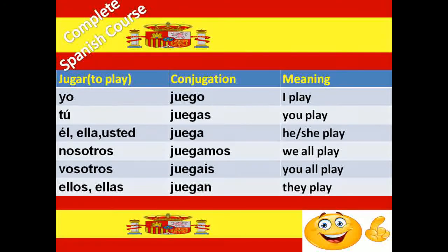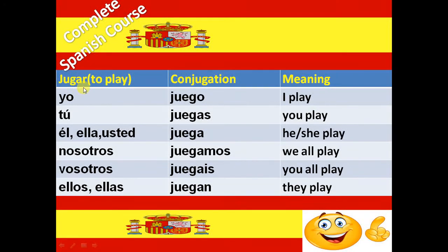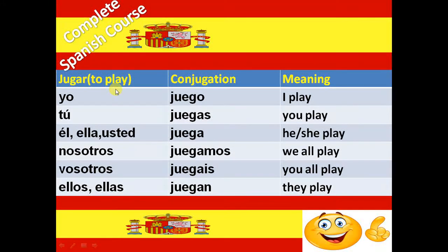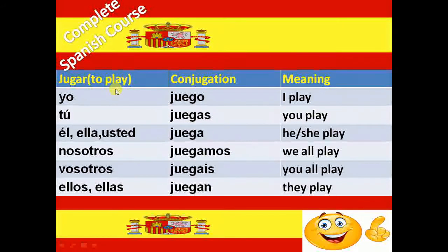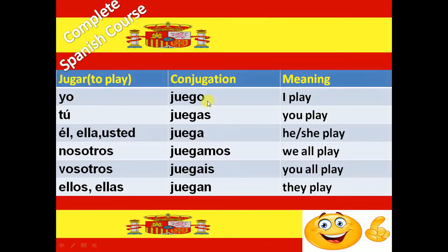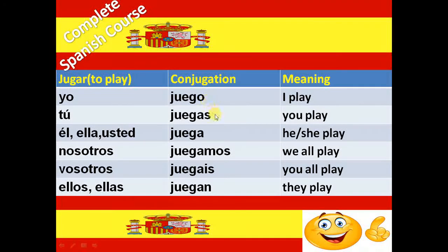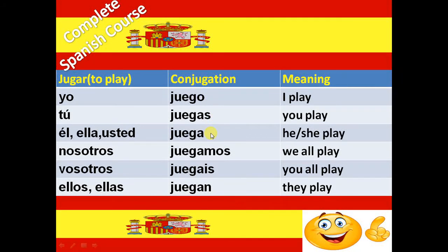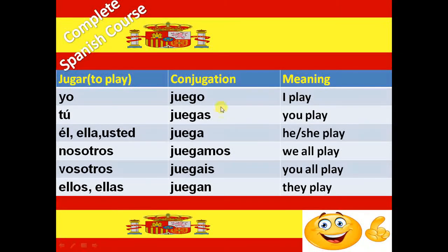Next verb is Jugar. Jugar means to play. And the conjugation of Jugar verb is Juego, Juegas, Juega, Jugamos, Jugáis and Juegan.